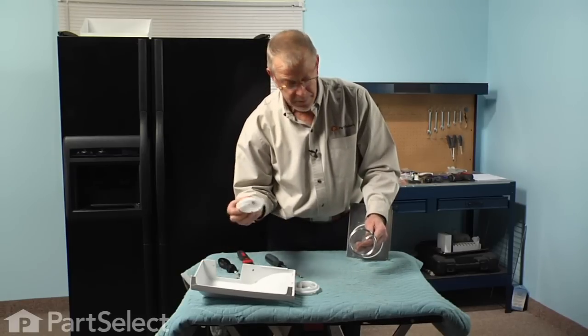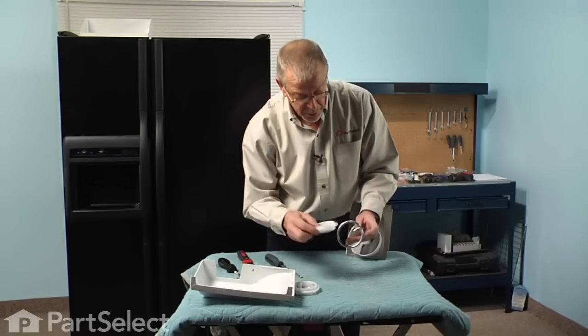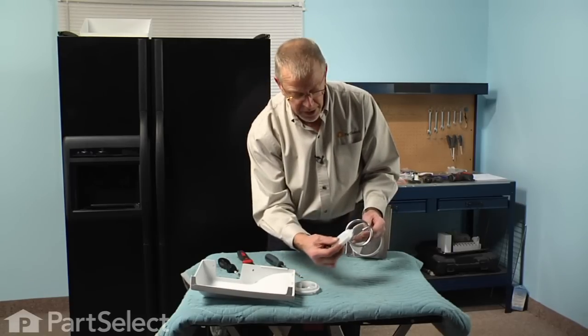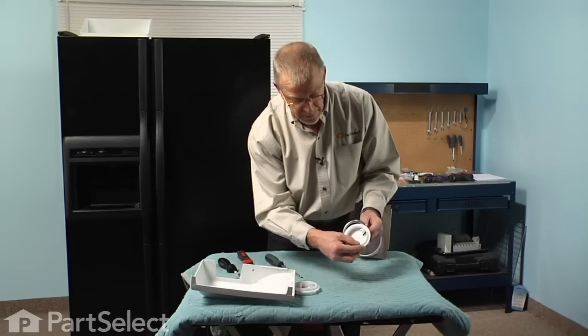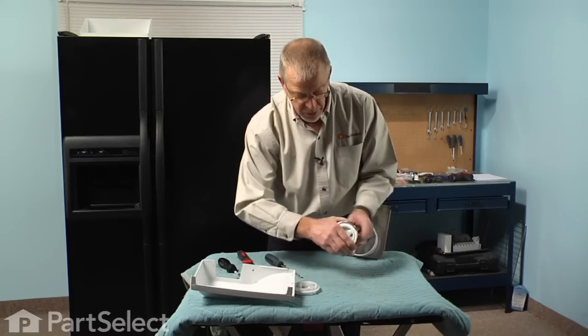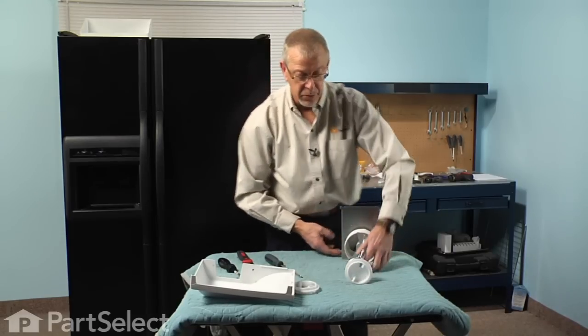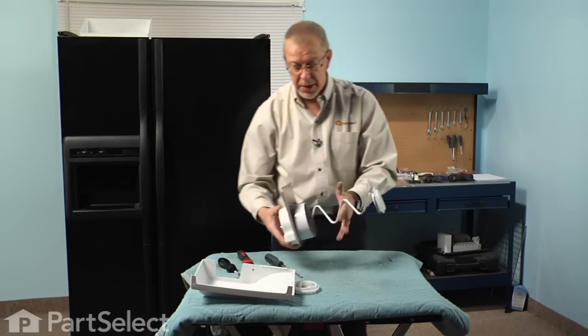To install our new one, we'll line up that square opening with the end of the auger, insert it on an angle like this, and we're just going to rotate it into place. Now we're ready to reinstall the auger assembly into the bin.